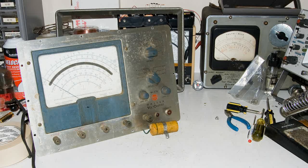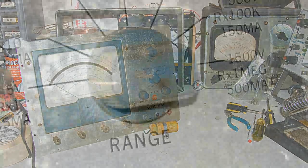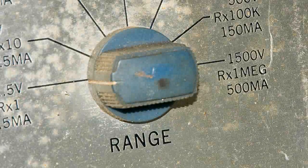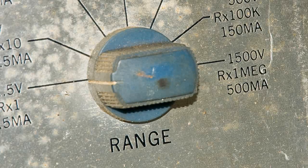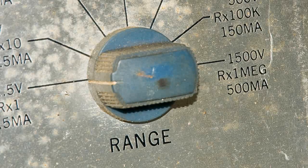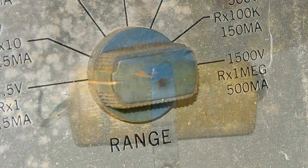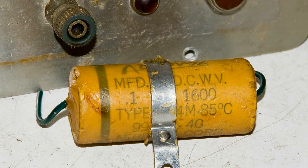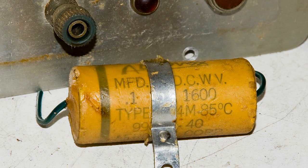So I decided it's time to start replacing the capacitors. And looking at this range switch, notice that the high voltage is 1500 volts. Well, that's why this capacitor has a working voltage of 1600 volts.